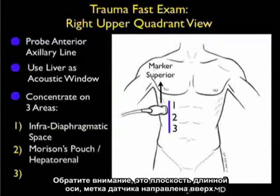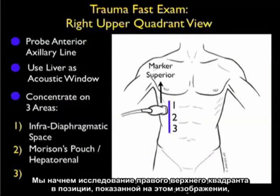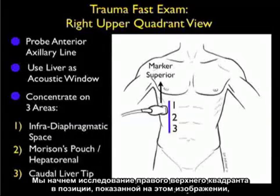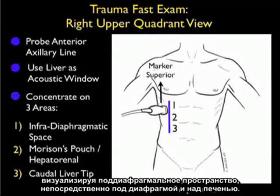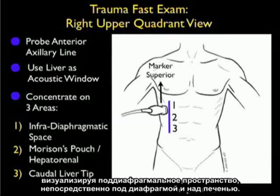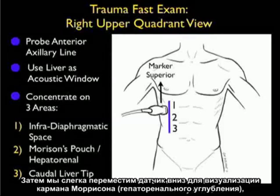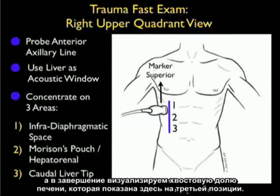Notice that this is a long axis view with the probe marker positioned superiorly. Our first view from this right upper quadrant area will be position one, in the infra-diaphragmatic space, just below the diaphragm and above the liver. Second, we'll move the probe slightly inferiorly to look into the traditional Morrison's pouch or hepatorenal interface, and the last view is the caudal tip of the liver shown here in position three.